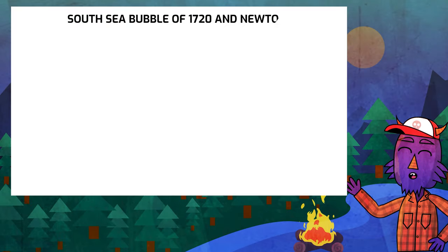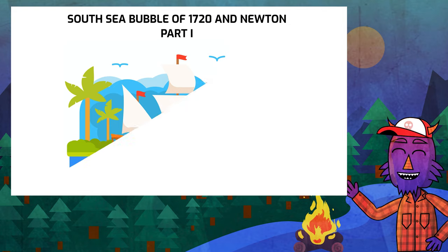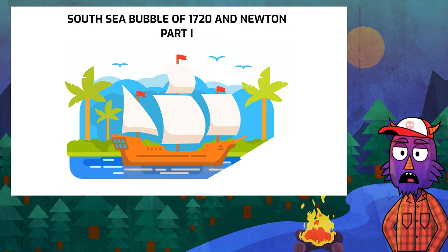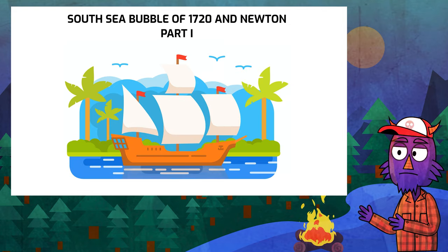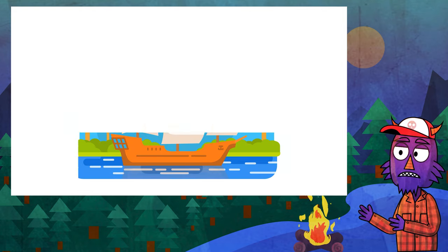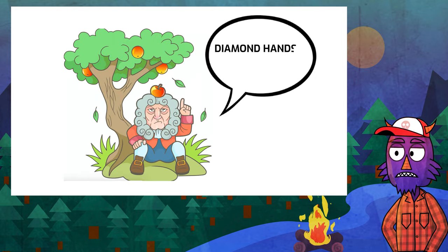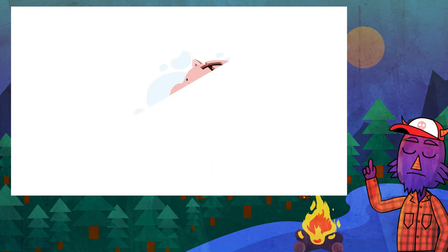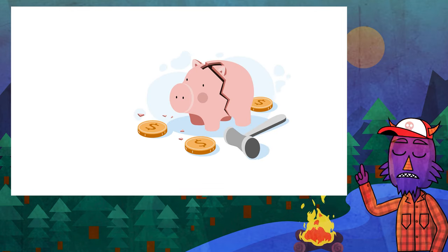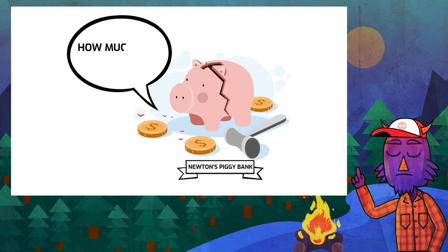Hello there, my name is Mr. Money. Today we are going to have a look at one of the earliest recorded financial bubbles, the South Sea bubble of 1720. What makes this bubble even more special is the involvement of Sir Isaac Newton. He lost a fortune and we are going to try and estimate how much he lost.